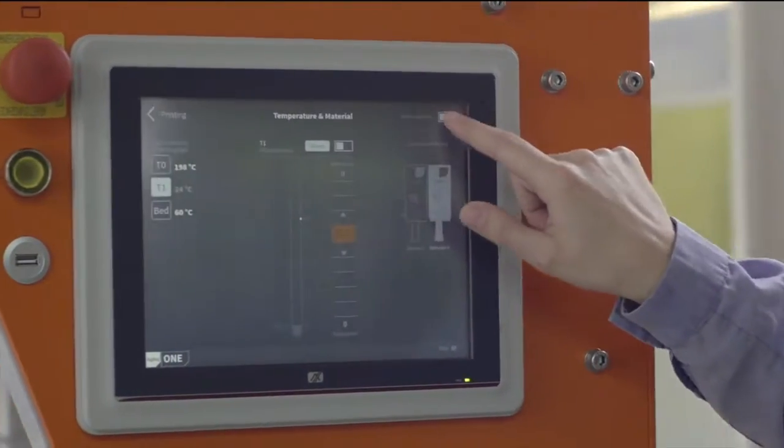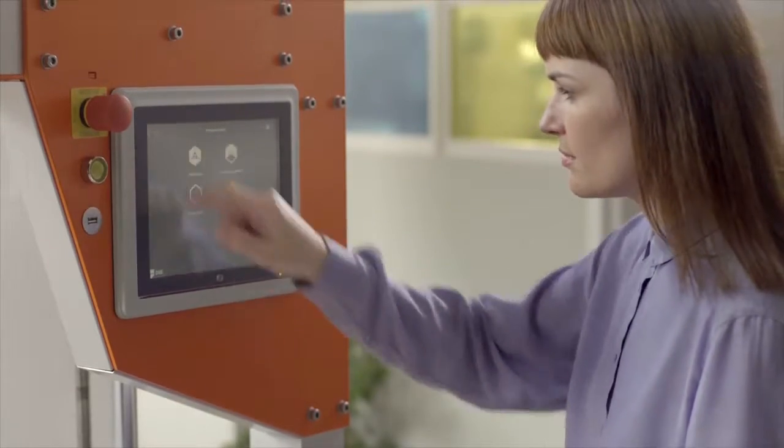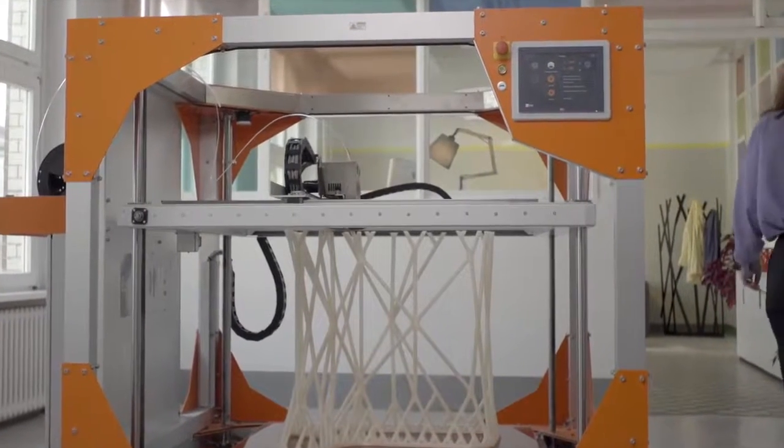An integrated control unit and touch panel allow you to monitor print time, change the speed, or even adjust the temperature of the print bed, all while the print is in progress.